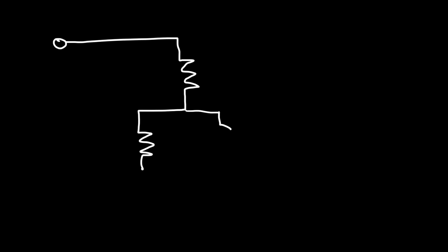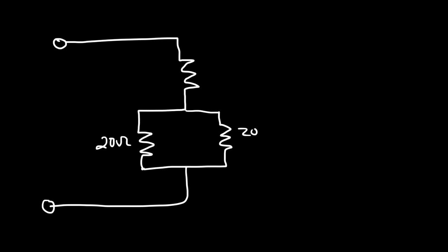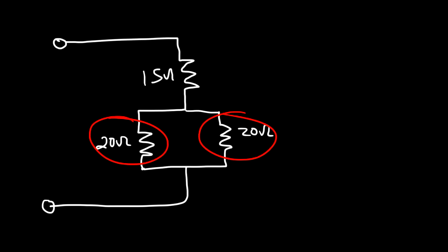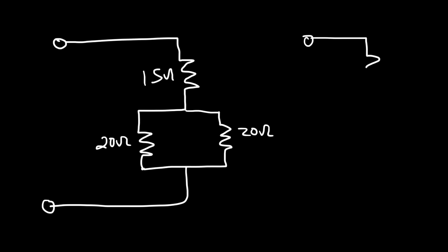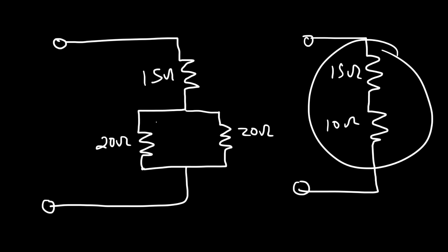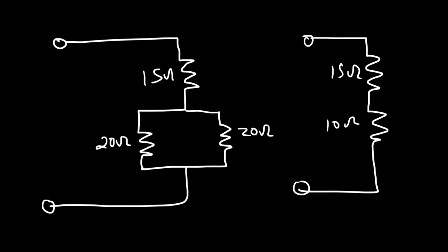Here's another example. Go ahead and calculate the equivalent resistance of this circuit. So let's say this is a 20 ohm resistor, and this is a 20 ohm resistor, and this is a 15 ohm resistor. Notice that these two resistors are parallel to each other and they have the same value. Therefore, the equivalent resistance of these two resistors — you can replace both of them with a 10 ohm resistor. Now we redraw the circuit. These two are now in series with each other, so we add 15 and 10 to get 25. The equivalent resistance for this circuit is 25 ohms.